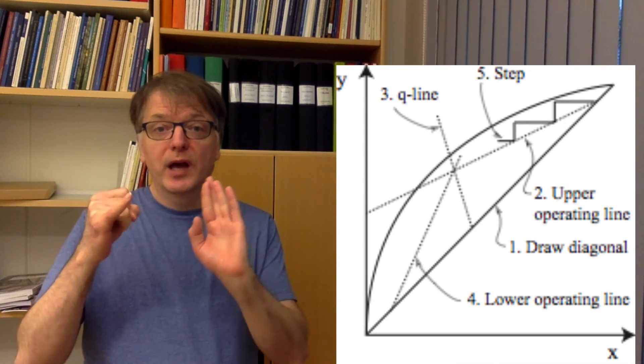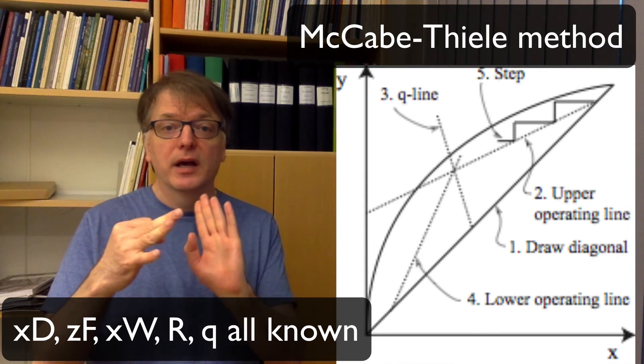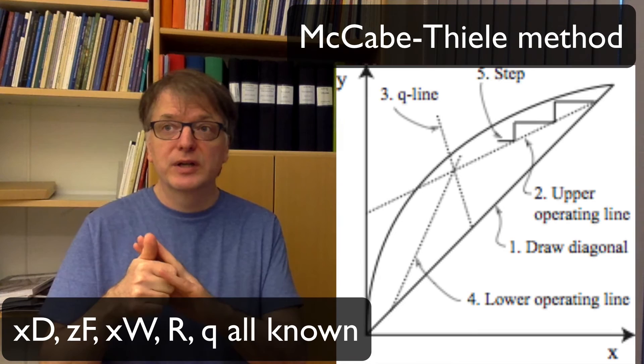So time to solve an exam question using McCabe-Thiele's graphical method. We will use the standard method where we have everything known: xD, xW, and zF, and we know the feed condition q, and we know the reflux ratio.